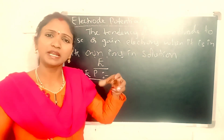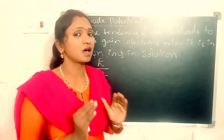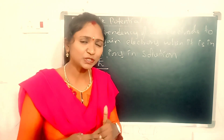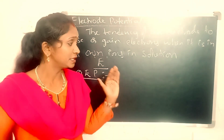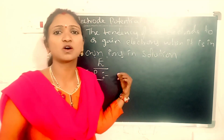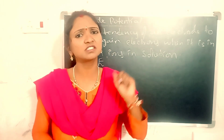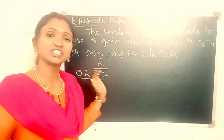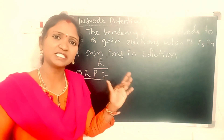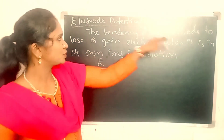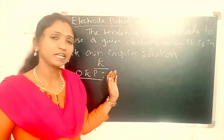The tendency of an electrode to lose electrons when the electrode is in its own ions in solution is called oxidation electrode potential. The tendency to lose electrons means loss of electrons, and loss of electrons is called as oxidation.